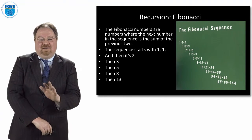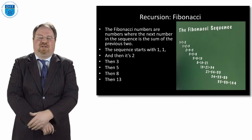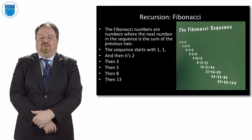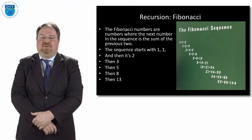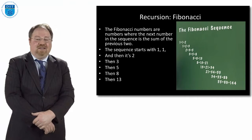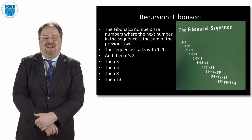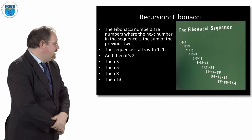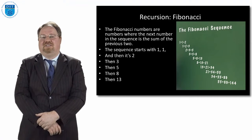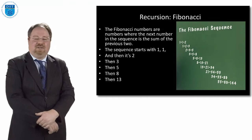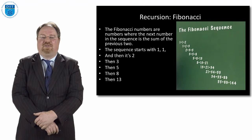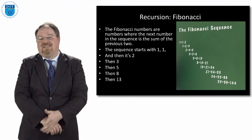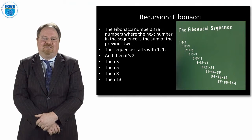If you want to know how many kilometers are in a particular number of miles, find the nearest Fibonacci number to the number of miles, and the next number in the sequence will be the number of kilometers. For example, if the number of miles is 5, the next number in sequence is 8 — so 5 miles is 8 kilometers. 8 miles is about 13 kilometers, 13 miles is about 21, 21 miles is about 34, and 34 miles is about 55 kilometers, and so on.